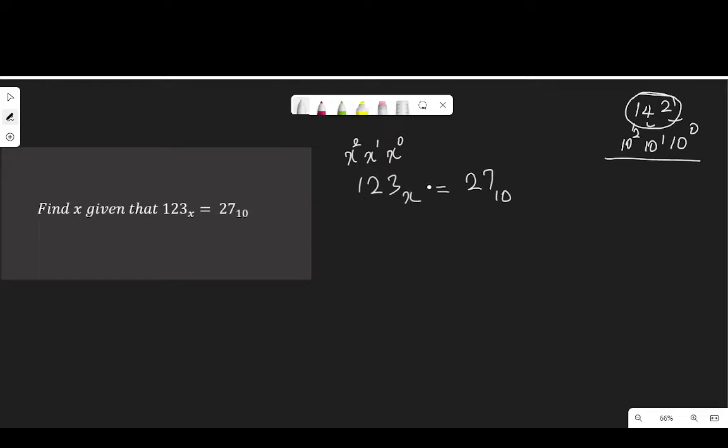So, writing each of these digits as a product of its place value, I will have 1 multiplied by x to the power of 2 plus 2 multiplied by x to the power of 1 plus 3 multiplied by x to the power of 0 equal to 27. It is already in base 10, so I don't need to express it in any other thing again.